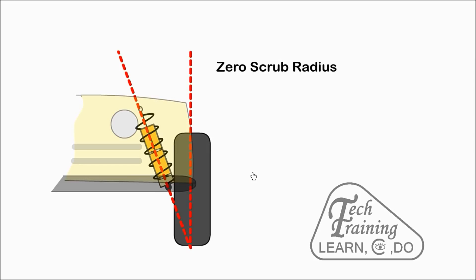Scrub axis is the distance between the steering axis road contact point and the centre of the wheel. When both meet at the same axis, it is called zero scrub. When the steering axis point is towards the inside of the wheel, it is called positive scrub radius. Braking force on this wheel will tend to turn it outwards.